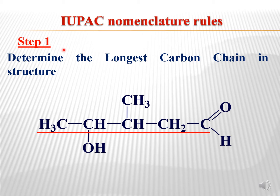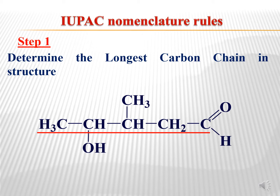Let's start with IUPAC nomenclature. The first rule is to determine the longest carbon chain present in the structure. Here you can see the example — identify the longest chain which includes the maximum number of carbon atoms present in the structure. The underlined marking indicates the longest chain which has the maximum number of carbons.